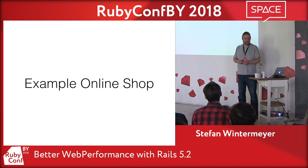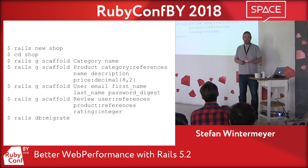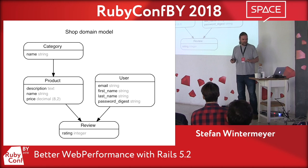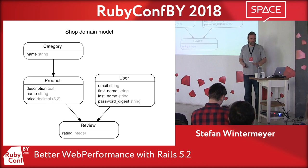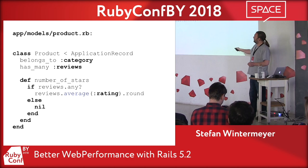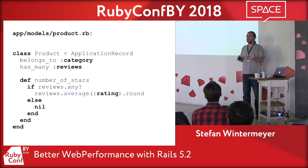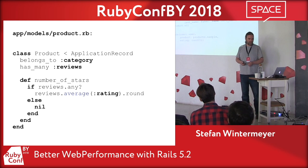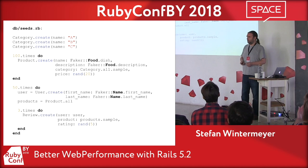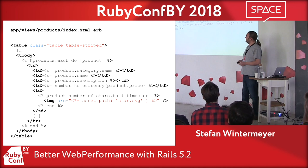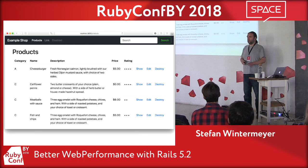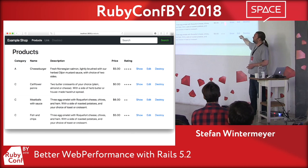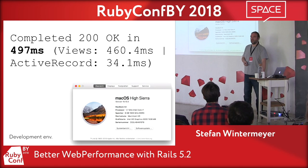So let's go through an example online webshop with Ruby on Rails. This is our model view: we have categories, products, users, and reviews — a standard webshop. The product has a number-of-stars method which does the average of the ratings, so we can see how good or bad a rating of a specific product is. I'm using the Faker gem to create the data. This is the index view — pretty standard, nothing too fancy. With a little bit of Twitter Bootstrap it looks decent, but that's minimum work.